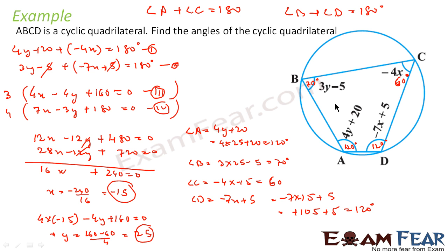So this is 120 degrees. So I have got all the angles: 120, 60, 70. This is 110 I think. 110, 105 plus 5. We see 110 plus 70 is 180, 120 plus 60 is 180, and that is my answer.